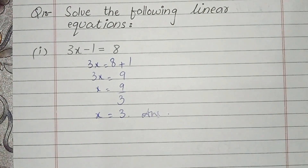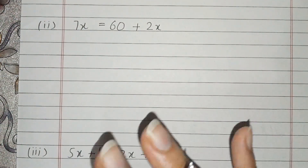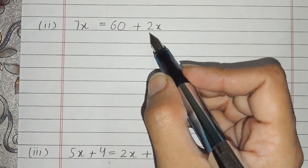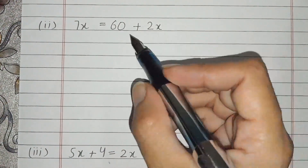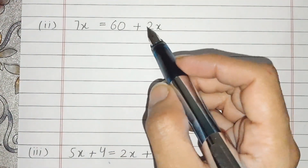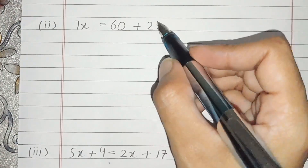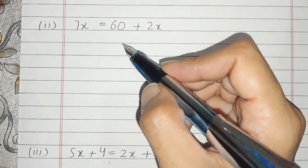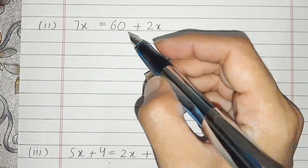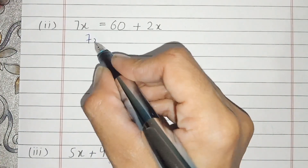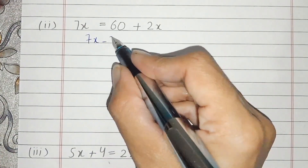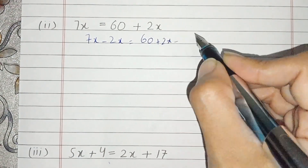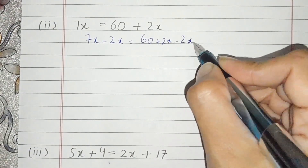And this is the answer. Very simple questions. Now, students, part number 2. We will do like terms — this is the method. If we do not know the term, we will do this. Then we will subtract both sides by 2x: plus 2x minus 2x.